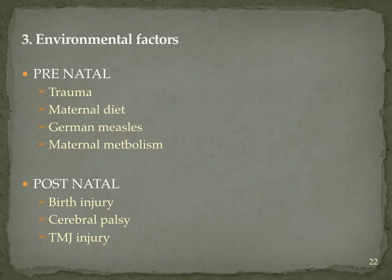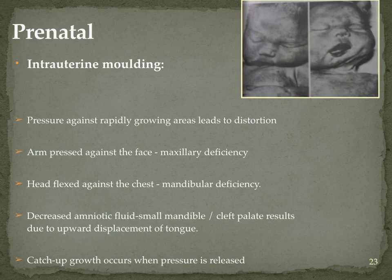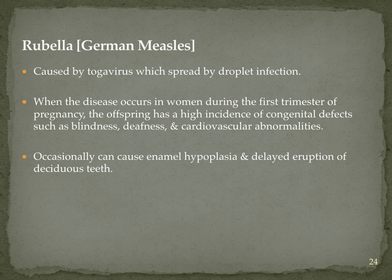Environmental factors are categorized as prenatal and postnatal. Prenatally, an abnormal posture of the fetus causing pressure on a particular area can impair growth of that jaw, though catch-up growth is generally expected once the pressure is released. German measles, a droplet infection, can lead to blindness, deafness, cardiovascular abnormalities, enamel hypoplasia and delayed eruption of deciduous teeth.